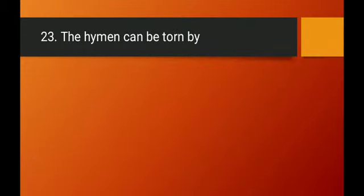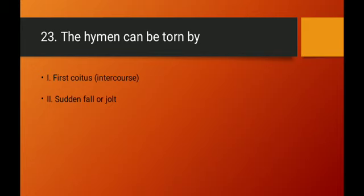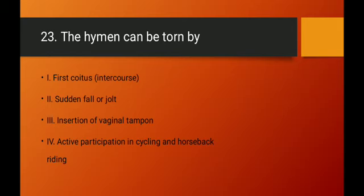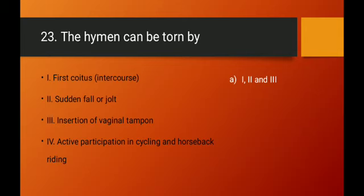Question number twenty-three: the hymen can be torn by which of the following? First coitus (in some females), sudden fall or jolt, insertion of a vaginal tampon (a type of contraceptive), and active participation in cycling or horseback riding — all are correct causes. All four statements are correct, so option D (1, 2, 3, 4) is the right answer.